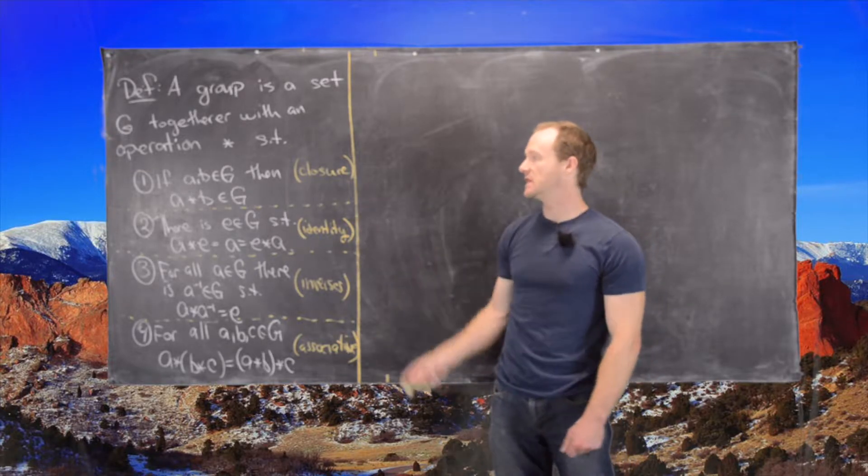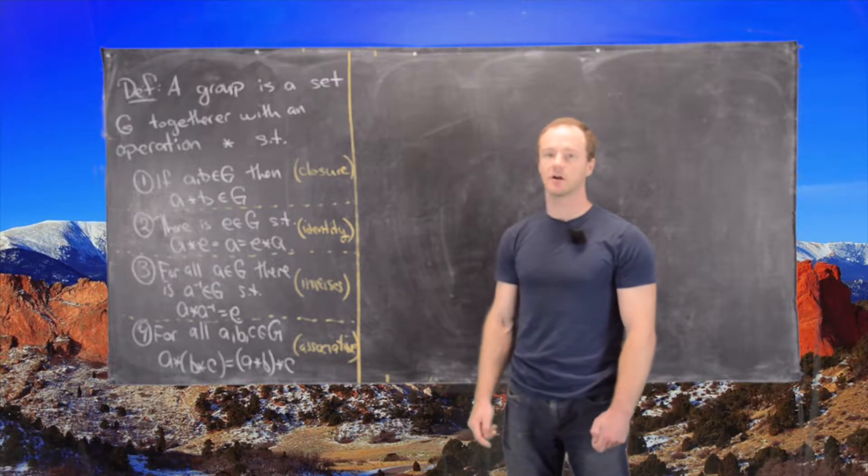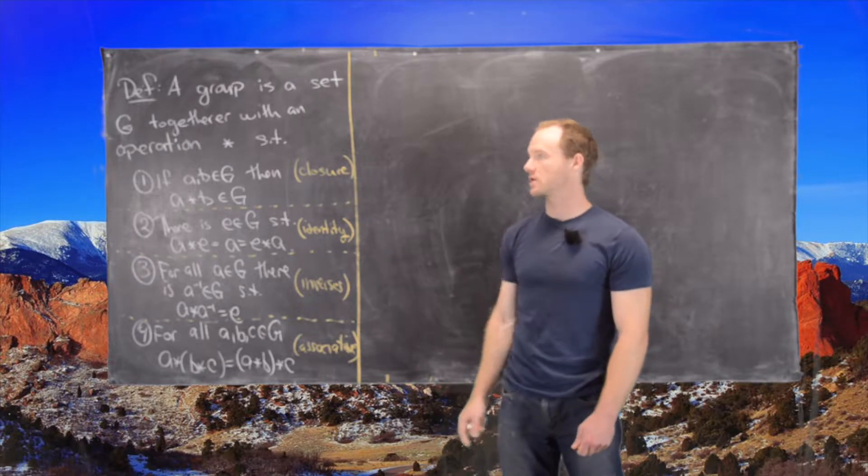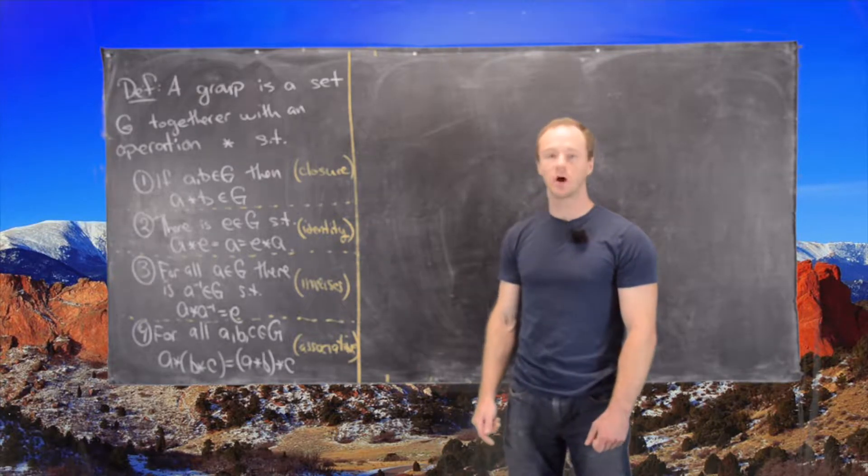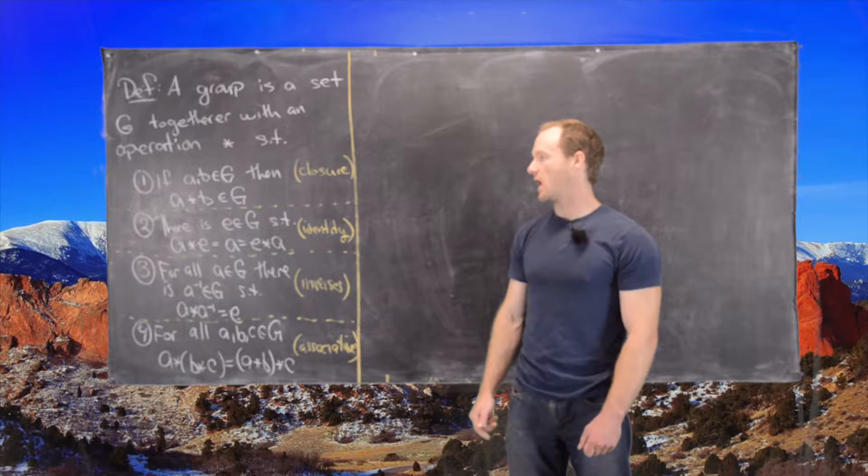So the first is that if A and B are in G, then A star B is in G. In other words, the group is closed under this operation.